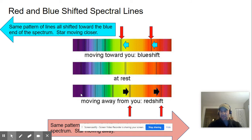On the bottom, we have light that is moving away from you. The same two lines right here in the yellow are these two lines, but shifted a little bit more towards the red end. This is the Doppler red shift.